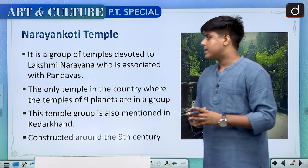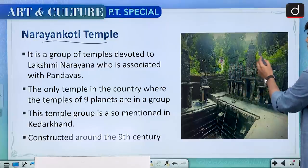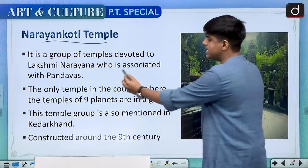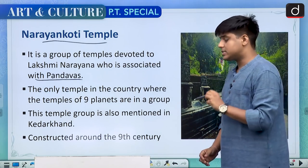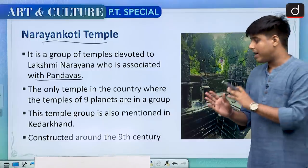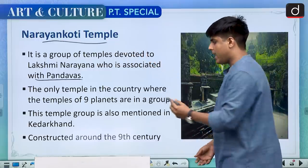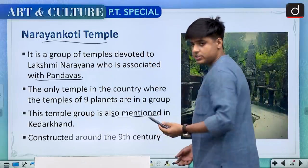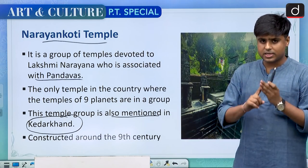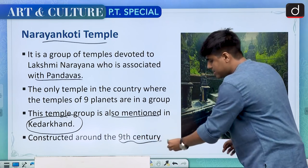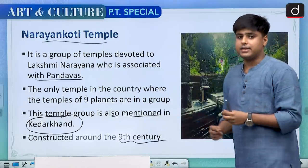Moving on to the next temple, Narayankoti Temple is actually a group of small temples associated with Lakshmi Narayan and also associated with the Pandavas. This is the only temple in the country where we find temples dedicated to the 9 planets of Hindu astrology and astronomy, and this temple is also mentioned in the ancient text of Kedarkhand. This temple was constructed in the 9th century. So keep in mind the chronology of temples discussed: 11th, 12th, 13th, and 9th.